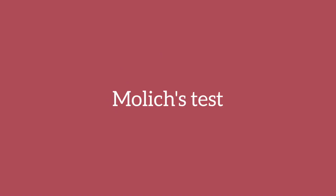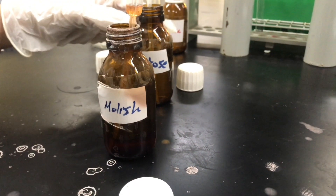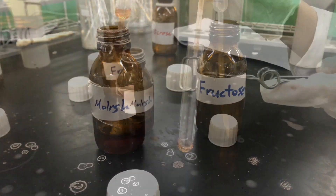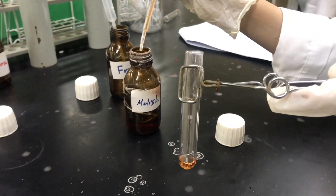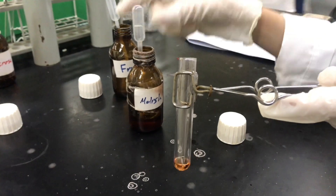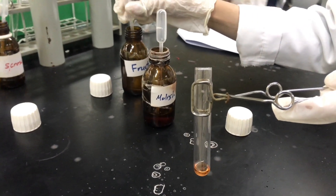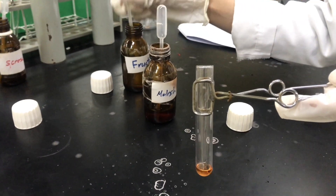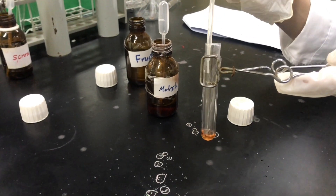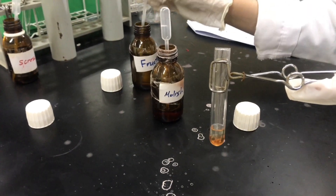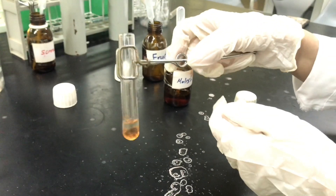Starting with Molisch's test, which is going to show us the presence of carbohydrates. In this experiment, we chose fructose as our choice of carbohydrate. Add two drops of Molisch's reagent to two mils of the test solution and shake well.